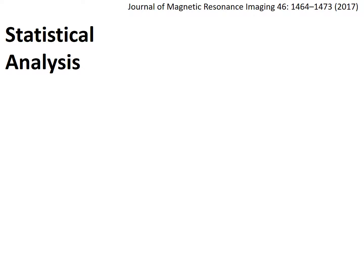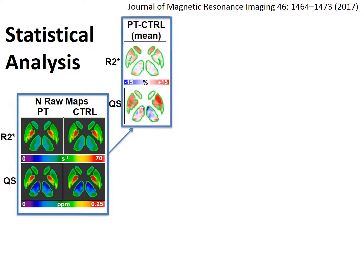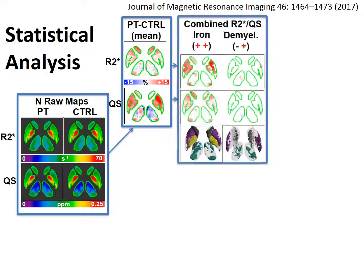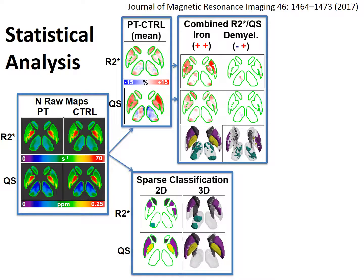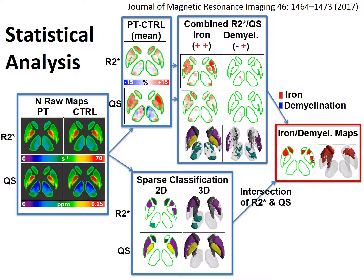We performed dimensionality reduction using sparse logistic regression to classify regions that consistently change in patients compared to controls. We started by producing R2-star and quantitative susceptibility maps for all subjects within our patient and control groups. Next, we subtracted the mean R2-star and mean quantitative susceptibility of controls from patients, which were used to label regions within deep brain matter as iron accumulation or demyelination. In parallel, a sparse logistic regression step was performed to identify sparse regions in R2-star and quantitative susceptibility maps. The intersection of R2-star and quantitative susceptibility sparse maps were used to identify common sparse volumes that consistently change in patients compared to controls.